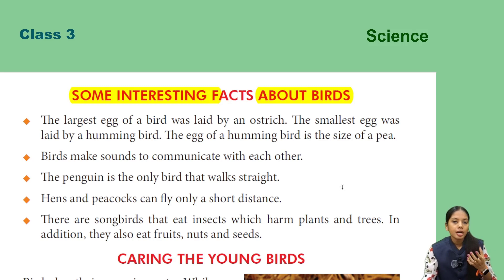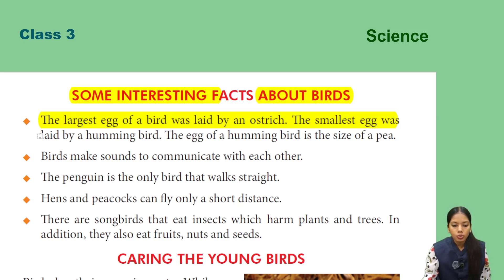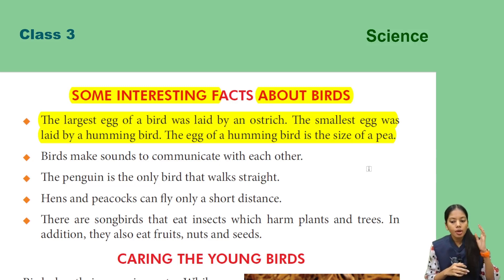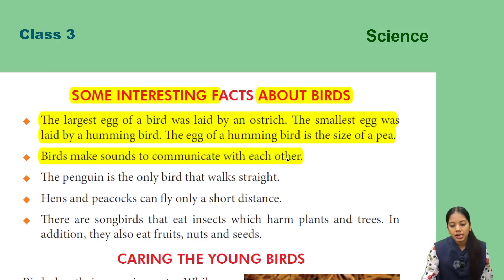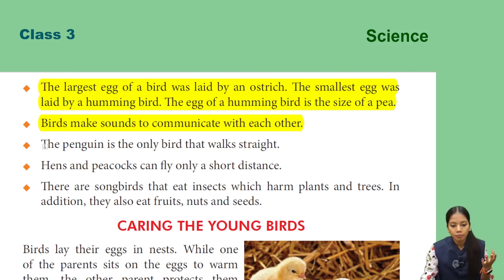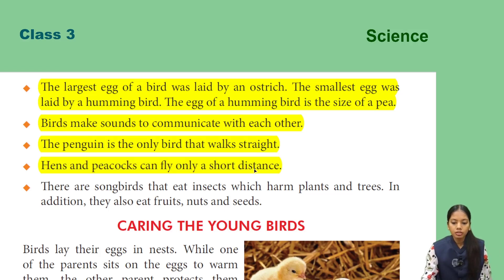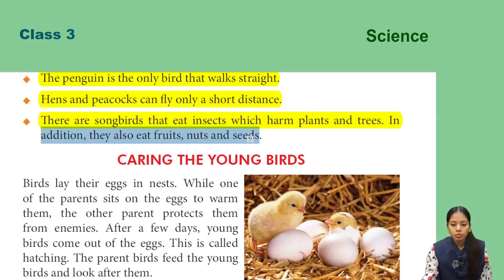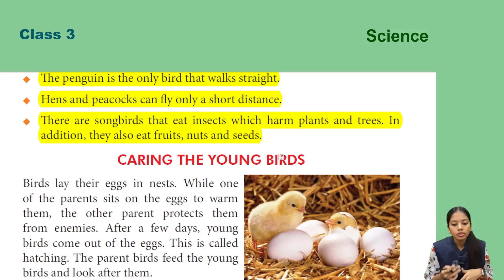Some interesting facts about birds: the largest egg of a bird was laid by an ostrich, and the smallest egg was laid by a hummingbird — the hummingbird's egg is the size of a pea. Birds make sounds to communicate with each other. Penguin is the only bird that walks straight. Hens and peacocks can fly only a short distance. Song birds eat insects which harm plants and trees, and also eat fruits, nuts, and seeds.